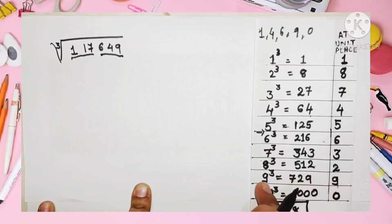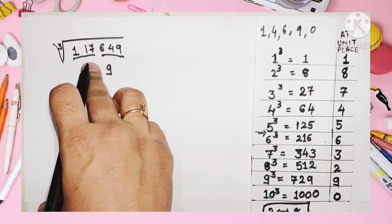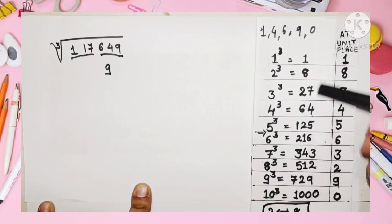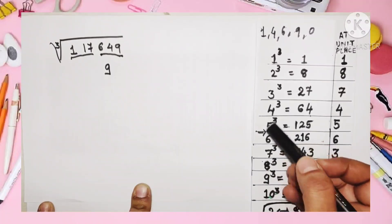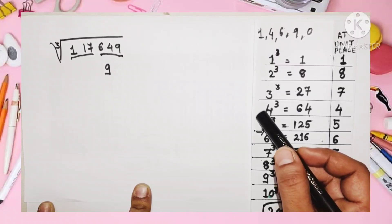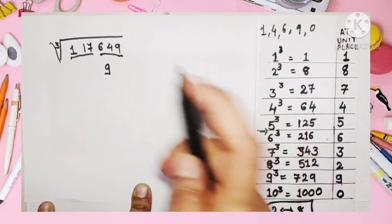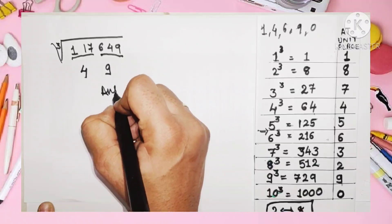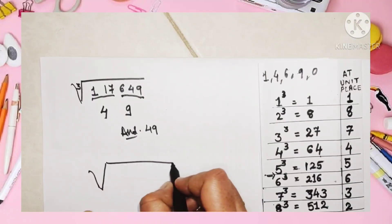Now for the second group, 117 — we find which two perfect cubes it falls between. 117 falls between 64 and 125, which are the cubes of four and five. We take the smaller number, which is four, and write it down. So our answer is 49. It's very easy once you learn this chart well — you can find the cube root in just a few seconds.